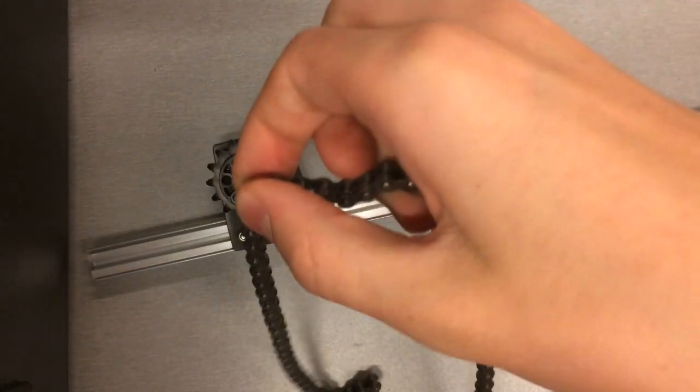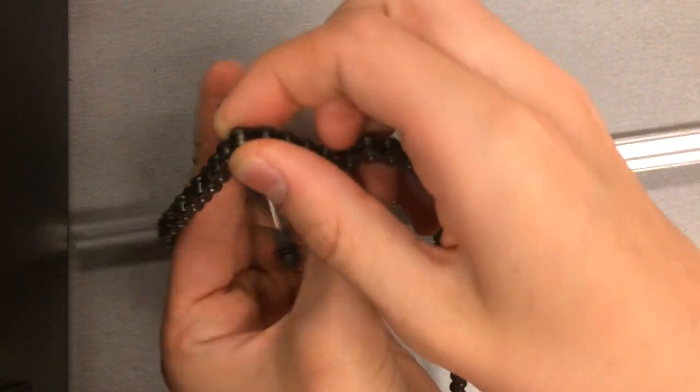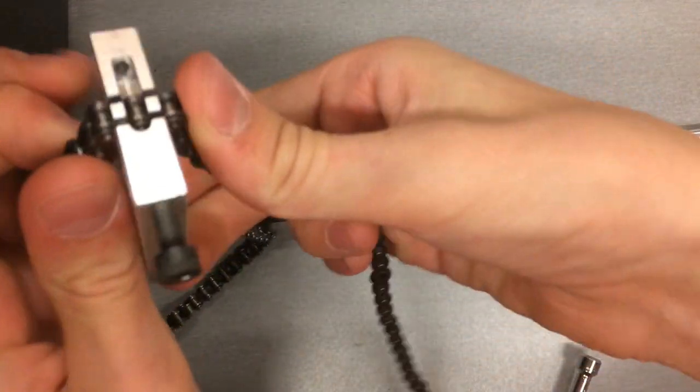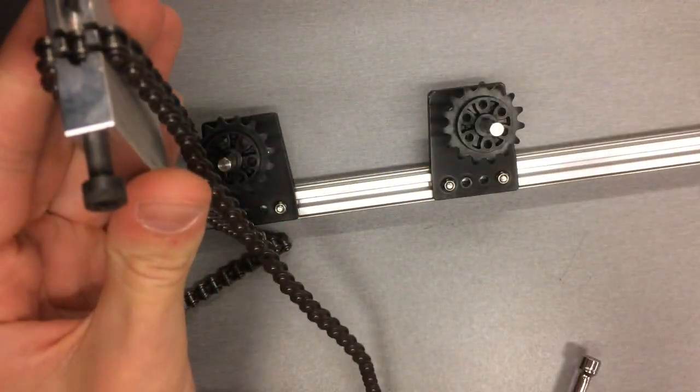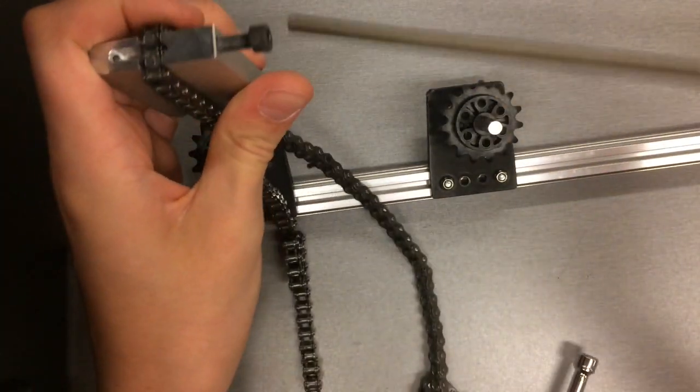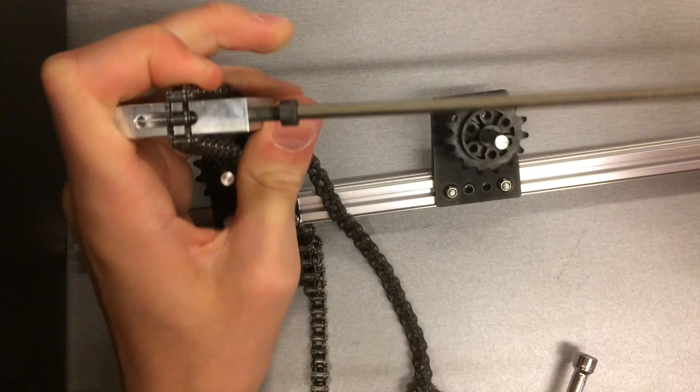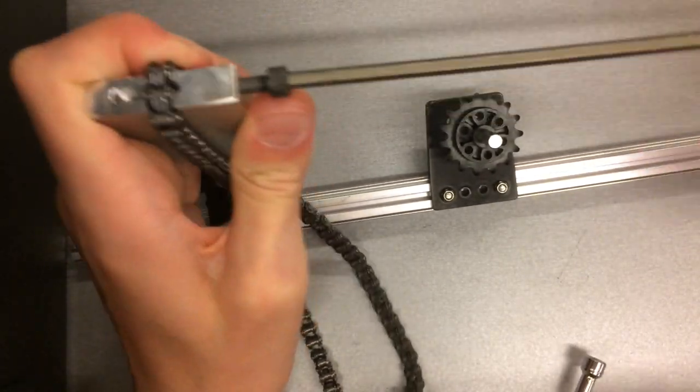Keep that link in your hand and then insert it into the chain breaker tool. Next, tighten the screw to push the pin out of the chain. This will separate the chain from the long section of chain.